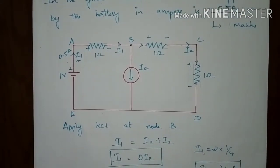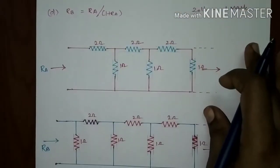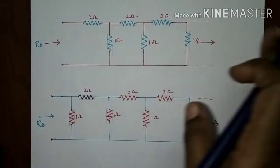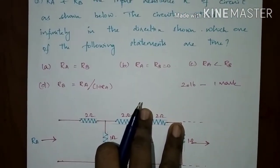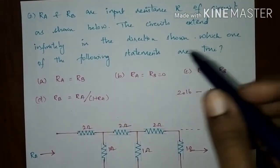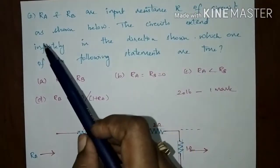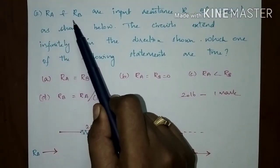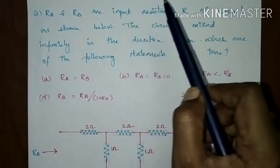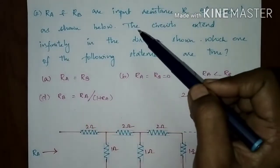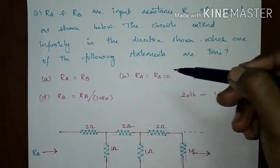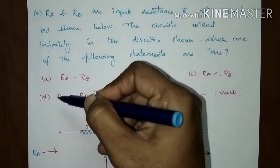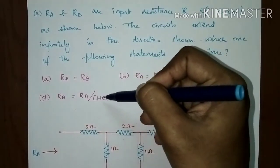Let's move on to the next problem. By seeing this problem you may feel it is complicated, but it is very easy. They have asked: which of the statements is true? Ra and Rb are the input resistances of the circuit shown below. The circuits are extended infinitely. The options are: Ra equals Rb, Ra equals Rb equals 0, Ra is less than Rb, or Rb equals Ra divided by (1 plus Ra).